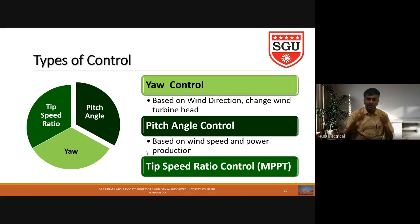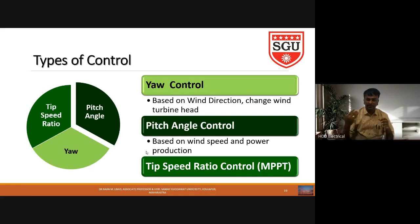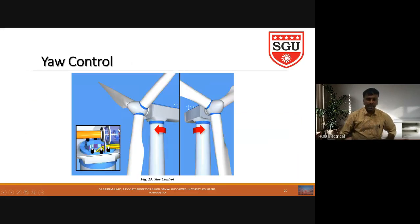In pitch angle control, each wind turbine blade can be controlled such that based on the quantity of wind, we adjust the blade angle — that is called pitch angle control. The third type is tip-speed ratio control, where we implement maximum power point tracking (MPPT) algorithm; I will explain that in further lectures.